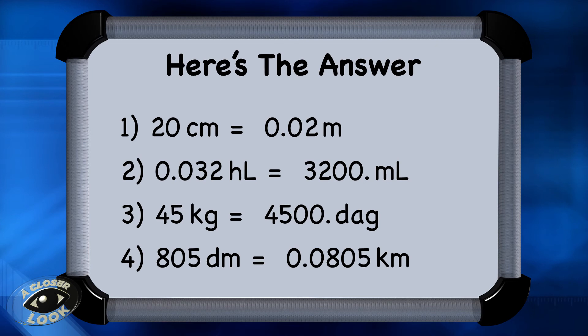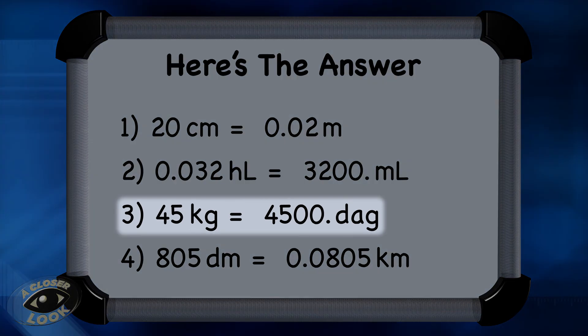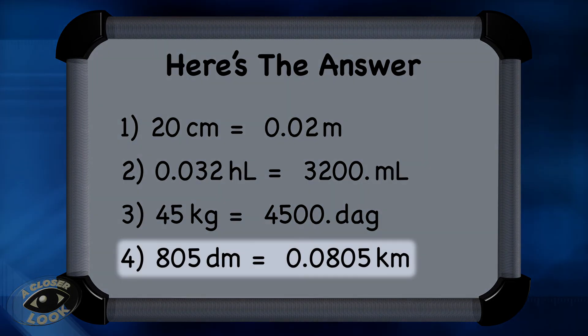In our third problem, the correct answer is 4,500 decagrams, where the decimal slid two places to the right. And our last answer is 0.0805 kilometers, which we got by sliding the decimal four places to the left.